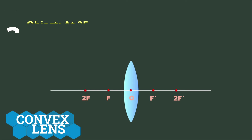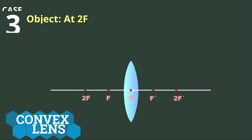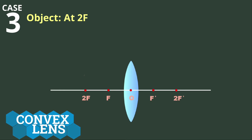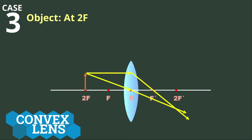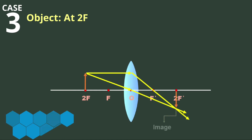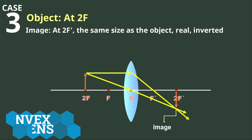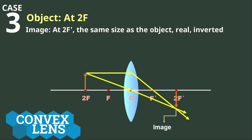In Case 3, the object is placed at 2F, or the center of curvature of the lens. Rule 1 is used for the first light ray and Rule 2 for the second. Both refracted rays intersect at 2F' on the other side of the lens. Therefore, when the object is placed at 2F, the image is formed at 2F'. Since the distance of the image is the same as the distance of the object from the lens, the image is the same size as the object, real, and inverted.